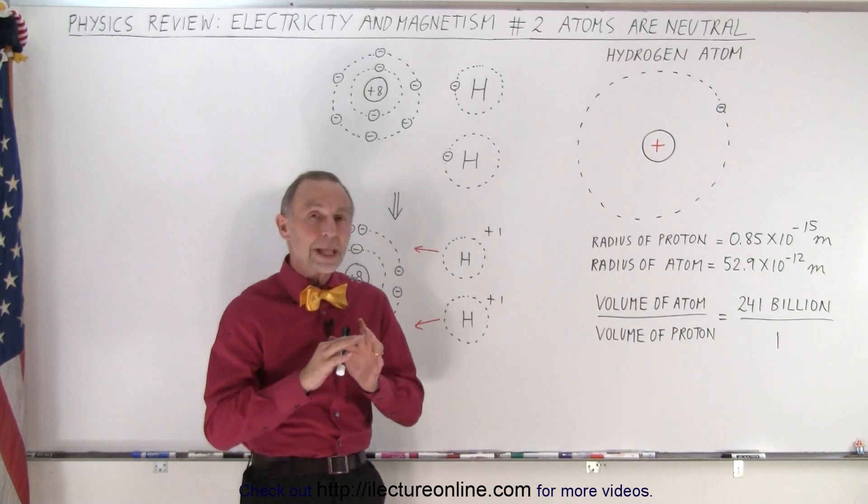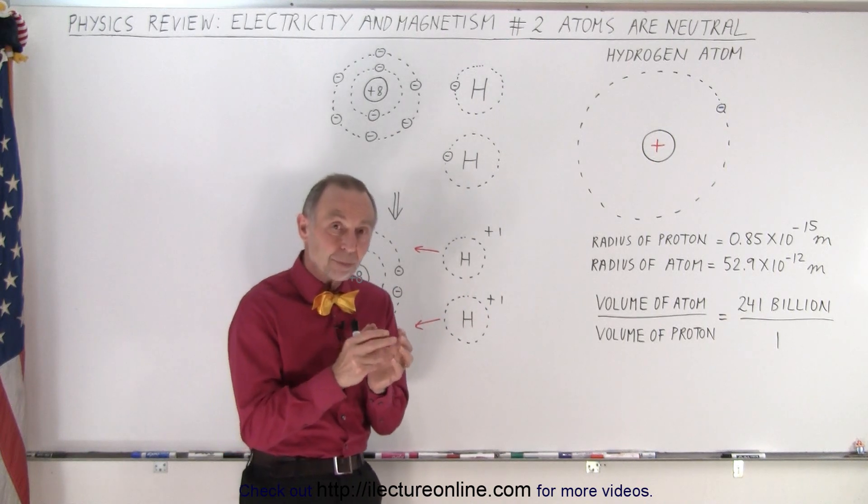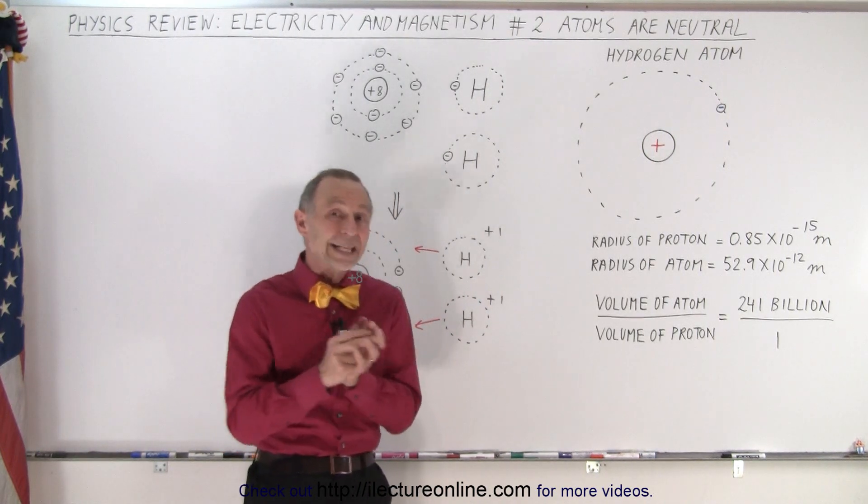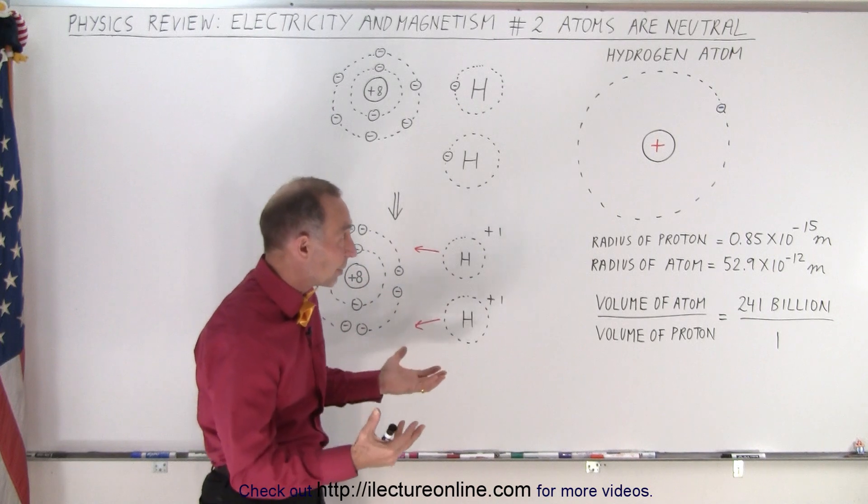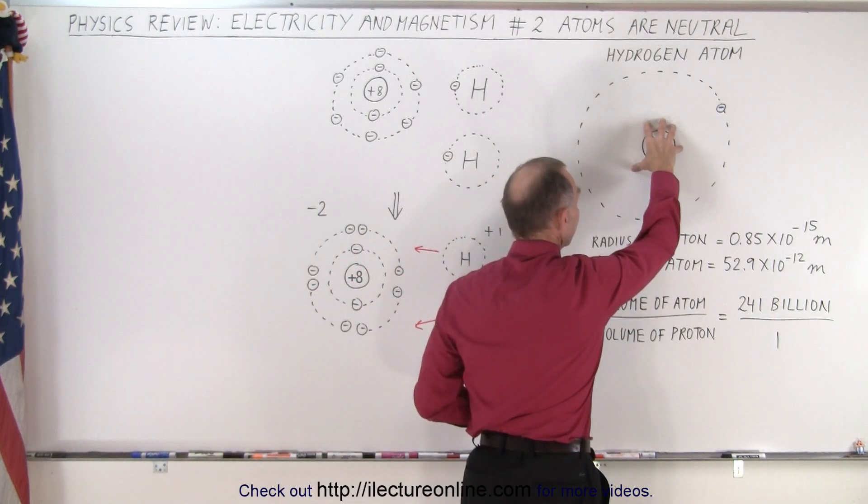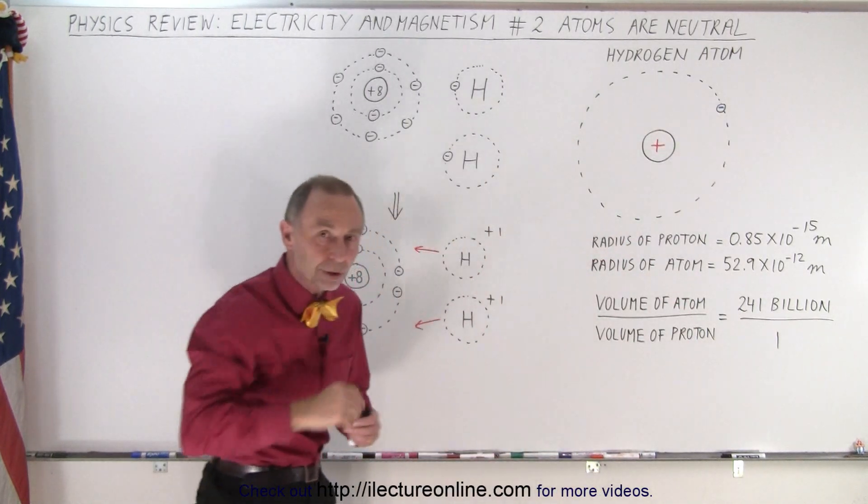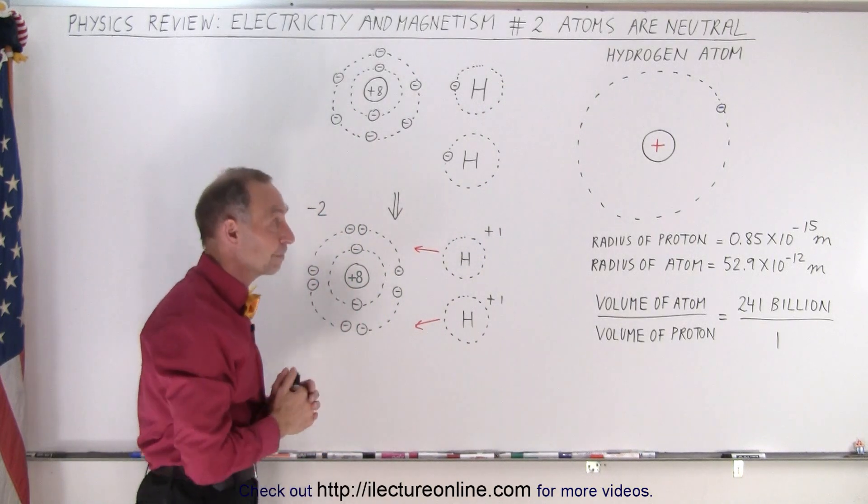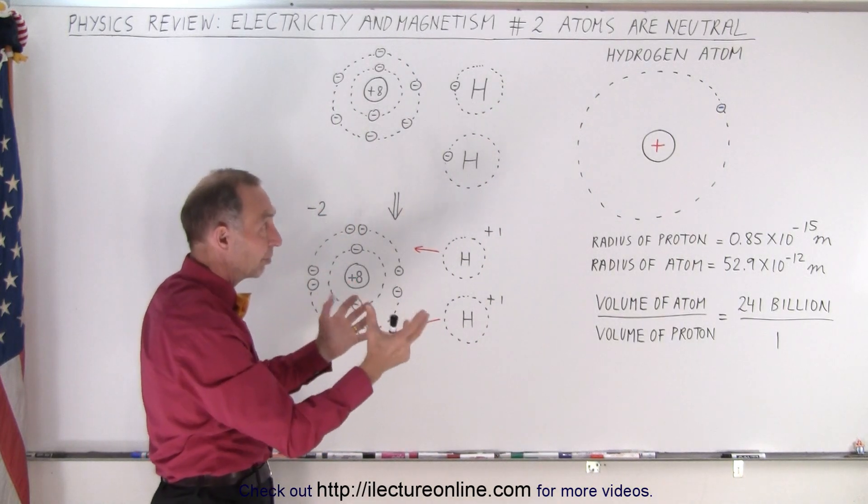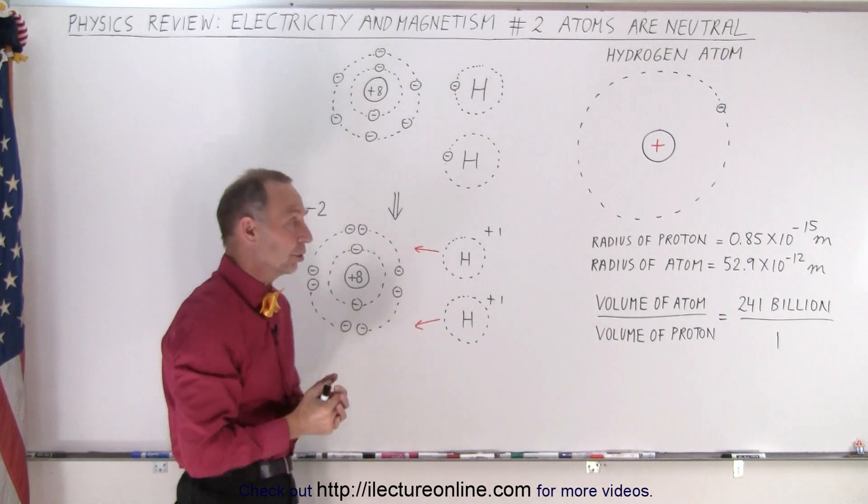So we do realize that all atoms tend to be neutral in charge. In other words, they have the same number of positive charges as they do negative charges. The simplest atom in the universe is hydrogen, and we realize there is one positive charge, a proton at the center, the nucleus is just one proton, and we have one electron zipping around the nucleus. Quite fast actually. And so together, since there's one positive and one negative charge, the atom in itself is neutrally charged.